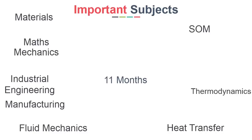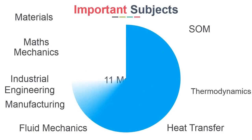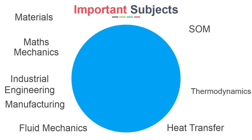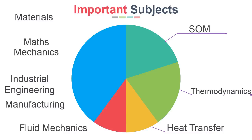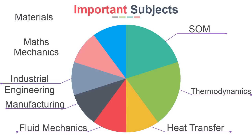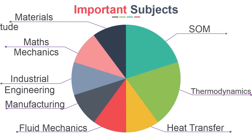You should prepare these subjects over the next 11 months, treating this time as 100%. Ideally, give 20% of time to SOM, 20% to Thermodynamics, 10% each to Heat Transfer and Fluid Mechanics, 10% to Manufacturing and Industrial Engineering, 10% combined to Maths and Mechanics, and the remaining 10% to subjects like Materials, IC Engines, and Aptitude.